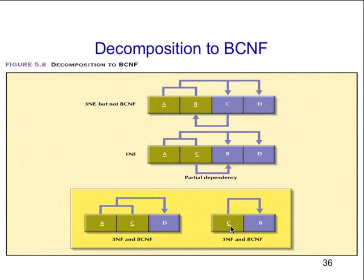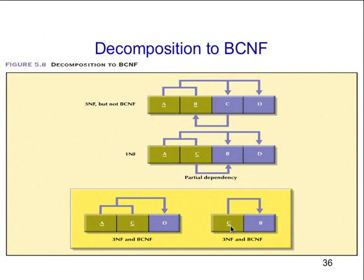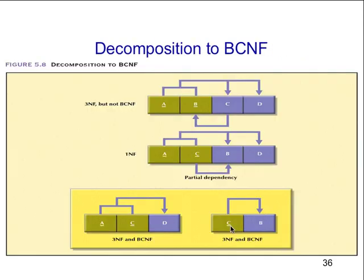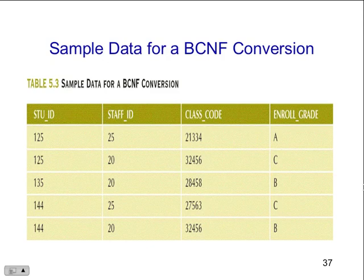So here we have the decomposition to BCNF. Here's the sample data for the BCNF conversion — we've gotten rid of the duplicates in terms of the Cs and the Bs. Now we have a student ID, a staff ID, a class code, and then we have the grade. This is a grading example — the staff ID would be the teacher for the students. Here we have the same student with two different staff IDs, two different class codes, and two different grades — we can keep track of all the different redundancies in a controlled fashion.